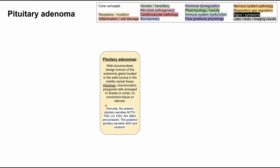It's helpful to remember that normally the pituitary has two parts: an anterior pituitary and a posterior pituitary. The anterior pituitary secretes a handful of hormones including ACTH, TSH, LH, FSH, GH, MSH, and prolactin. The posterior pituitary secretes only ADH and oxytocin, and these will be relevant when we talk about how this affects pituitary function.